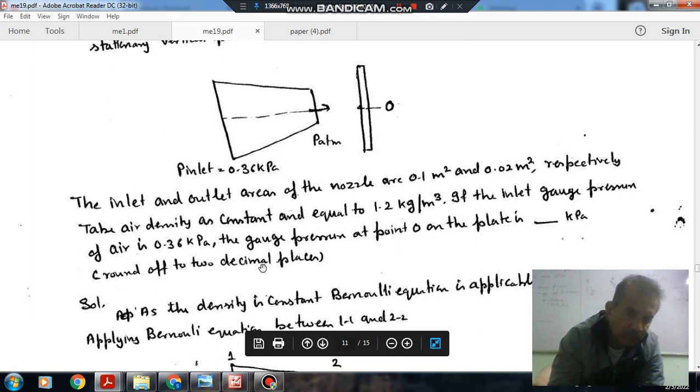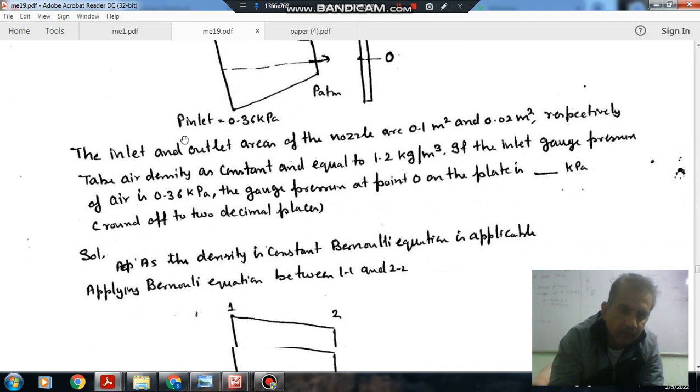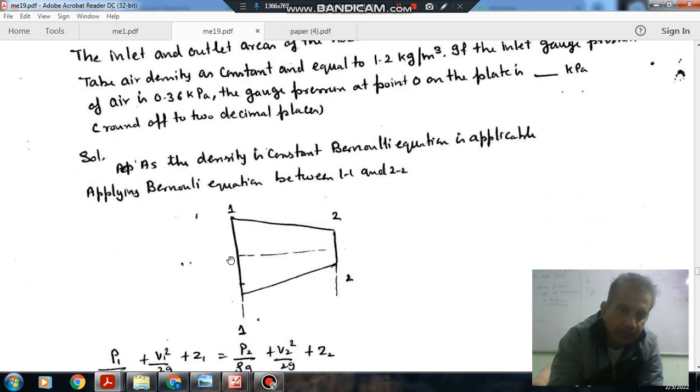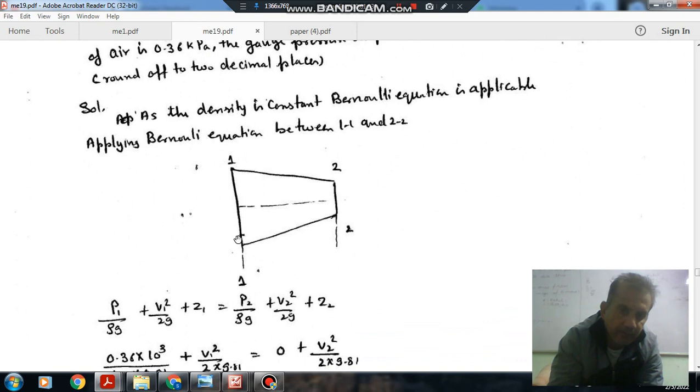Round off to two decimal places. So this is your gauge pressure, not the actual pressure. So applying Bernoulli's equation at 1 and 2.